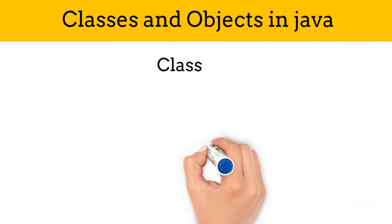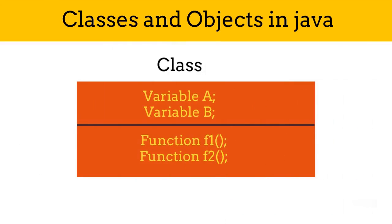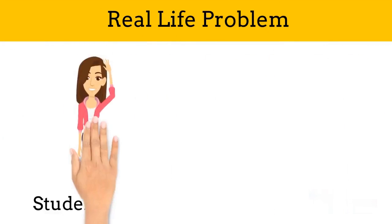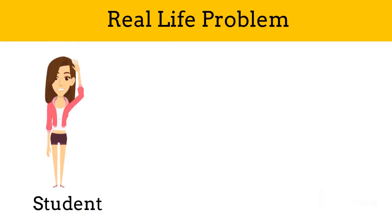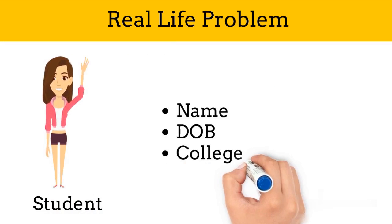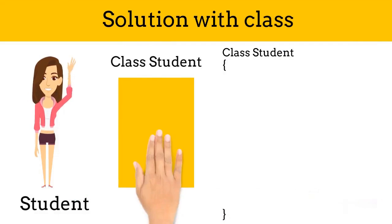What is a class? Class is a collection of functions and variables. Let's understand it with the help of a real life example. Consider we have to create a program which will store the data of a student like their name, date of birth and college name. For achieving this, we will create a class with the name Student. Class is a collection of variables and functions.